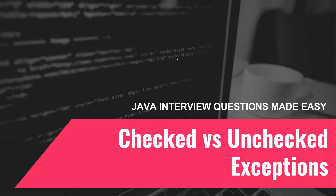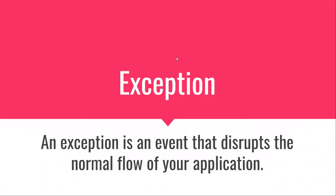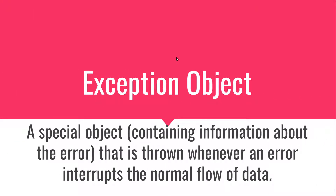Let's start at the beginning and discuss exceptions in general. An exception is an event that disrupts the normal flow of your application. You have a program running perfectly, and out of a sudden something bad happens and you end up in an error state — this is an exception. Most programming languages have mechanisms to deal with these sorts of situations, and Java is no exception. In Java, we have a special object called the exception object that is used to signal when such events happen. This object is thrown whenever an error interrupts the normal flow of data.